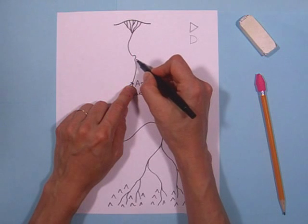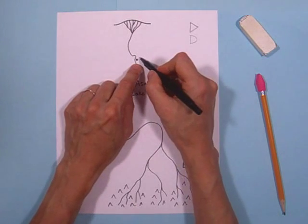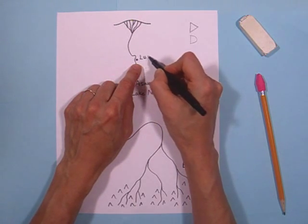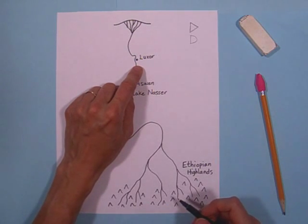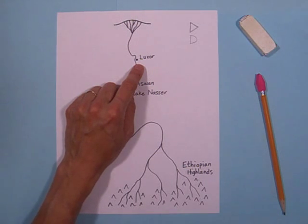Alright, let's put a dot right below that bump there and label it Luxor, L-U-X-O-R. And this is a very popular tourist site. This is where you go if you want to see King Tut's tomb, the Valley of the Kings, all those buried mummies and everything. This is where you go.